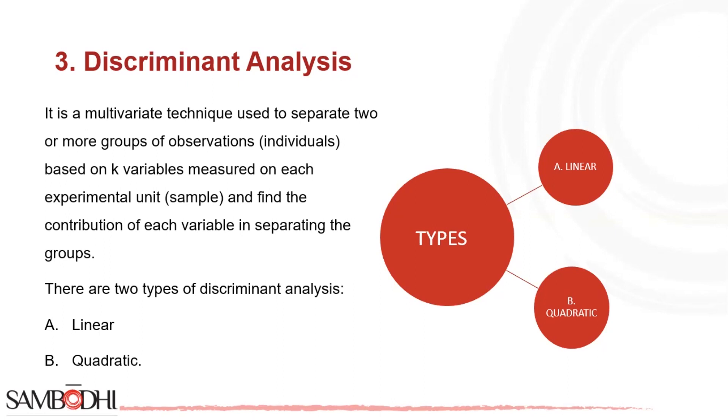It is predicated on the hypothesis that the independent variables have a normal distribution (continuous and numerical) and that each class has the same variance and covariance.